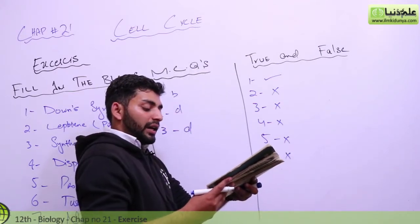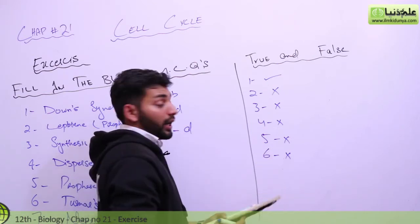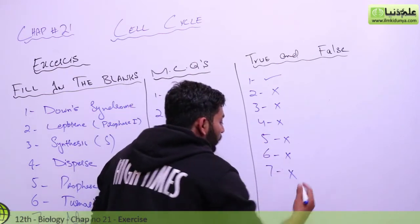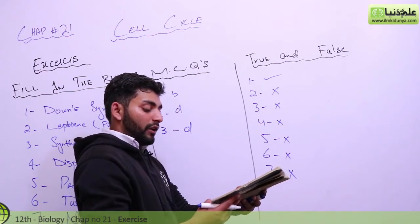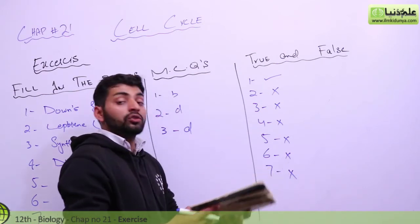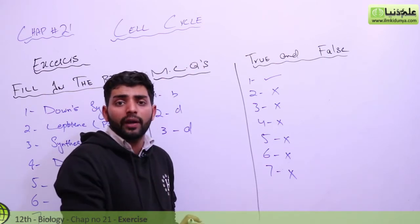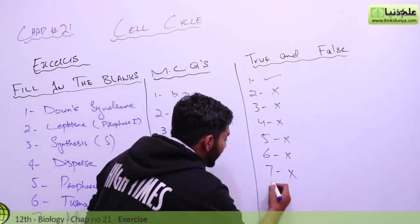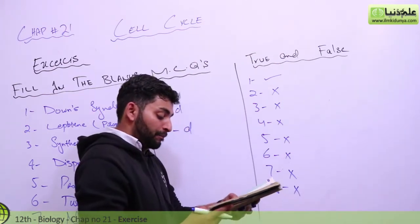Autosomal non-disjunction may occur in chromosomes other than the 21st chromosome — yes, it could occur, and there are different problems that can happen. Benign tumors are always non-localized — actually they are localized. If they are malignant, they spread to different places. So statement 8 is wrong.